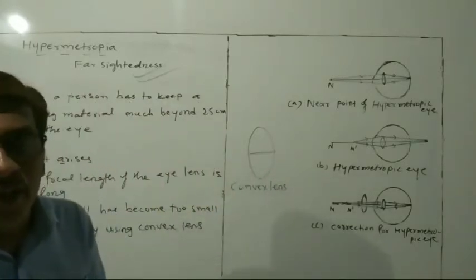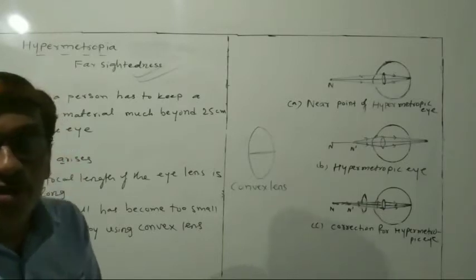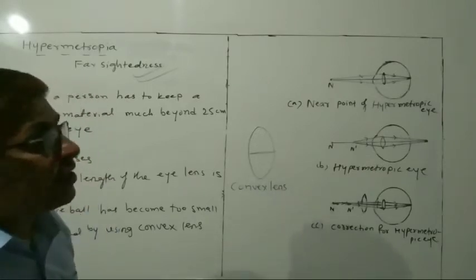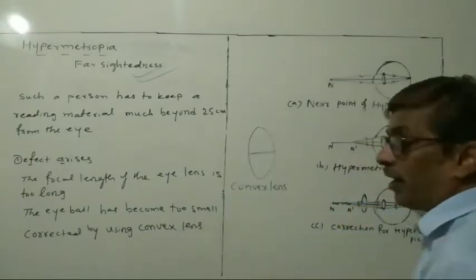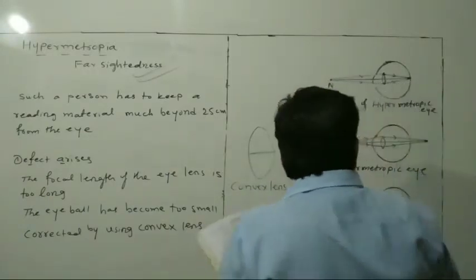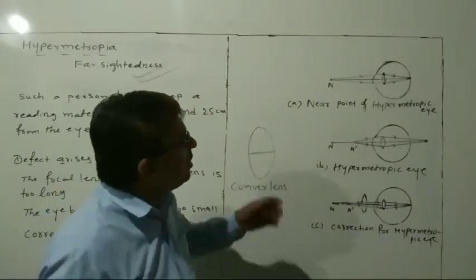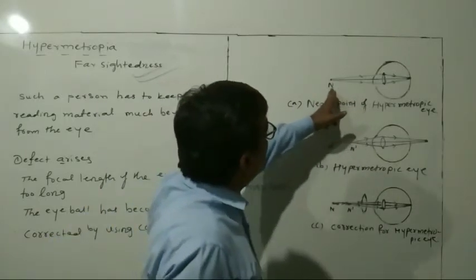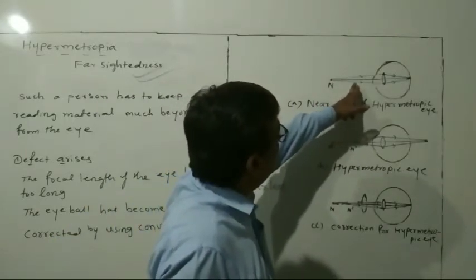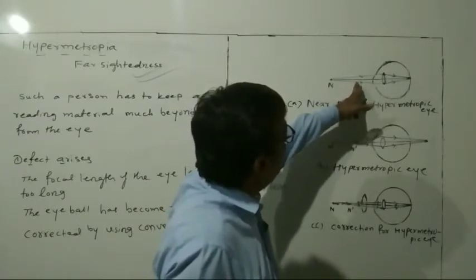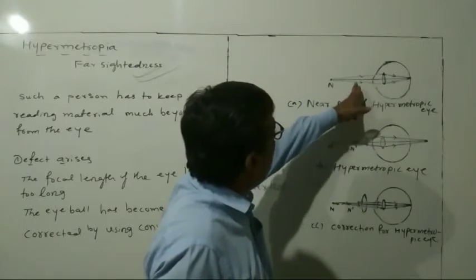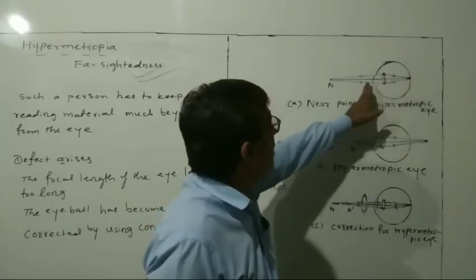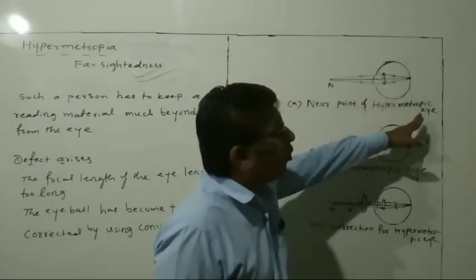So what does the diagram show? This is the near point of the hypermetropic eye. This is not the normal eye. The object is placed here, and if you are looking from here, the image will fall behind the retina. This is the near point of the hypermetropic eye.